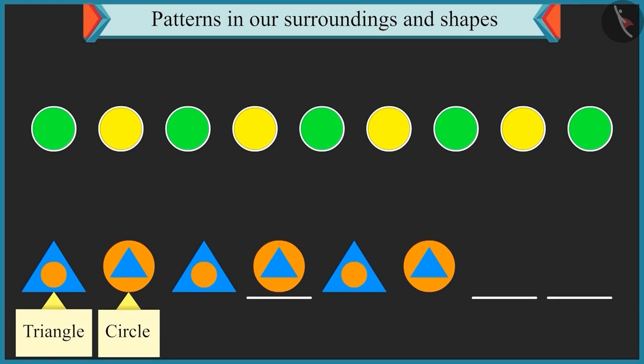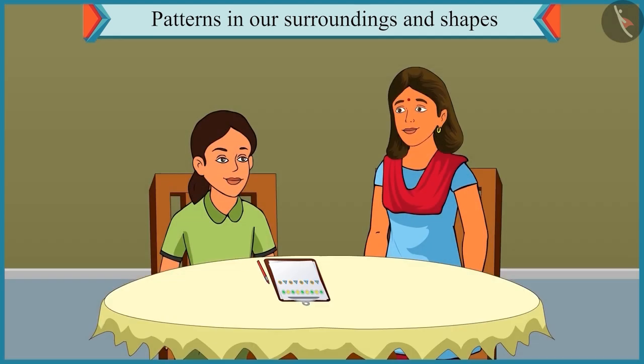Come on. Now try building this pattern. A shape with a small circle inside a triangle would come next. What will come after that? A shape with a small triangle inside a circle would follow this. Absolutely right. Well done.